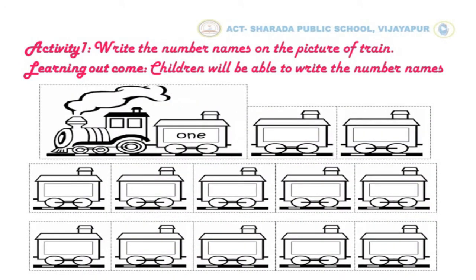Children, start writing the number names on the boxes of the train. Here, in this image of the train, O, N, E — 1 is written here. The next number is 2; we have to write T, W, O — 2.